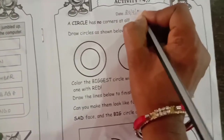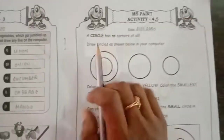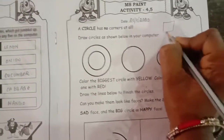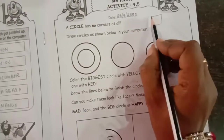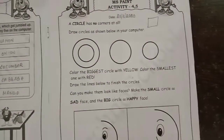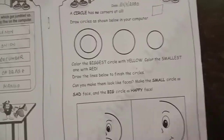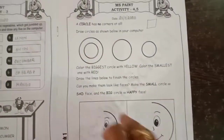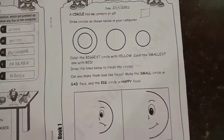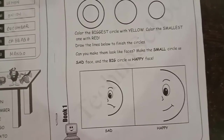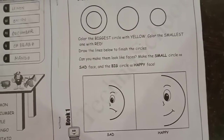Write the same date. A circle has no corners at all. A square or rectangle has corners — one, two, three, four — but a circle has no corners. Draw a circle as shown. Color the biggest one yellow and the smallest one red.